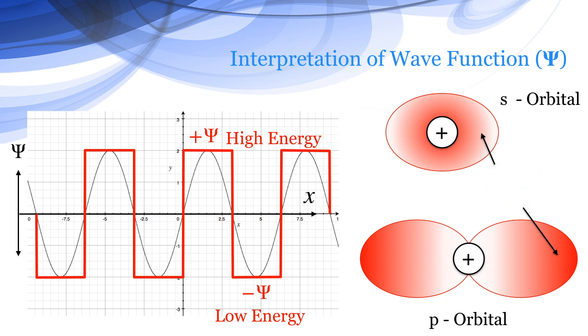Therefore, Einstein replaced this energy density with probability density. Thus, the electron cloud is actually the probability of finding the electron in that region.